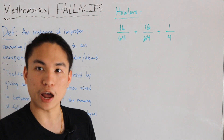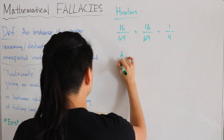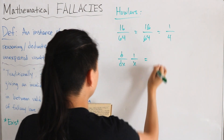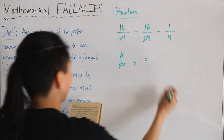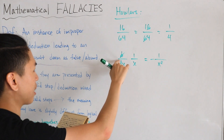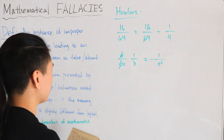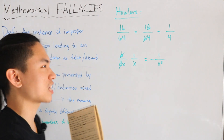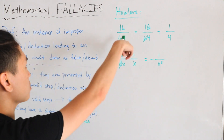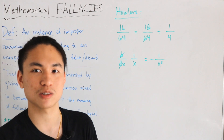Another howler fallacy due to anomalous cancellation is 48/98, where that same digit-canceling method again happens to give the correct answer. There's also a calculus-based howler: when taking the derivative of 1/x, one can naively cancel the d's and move the x, and still arrive at the correct answer of -1/x². That's a strange one, and it's the only calculus howler I've come across. Most howlers appear in the form of rational numbers simplified by incorrectly canceling digits.